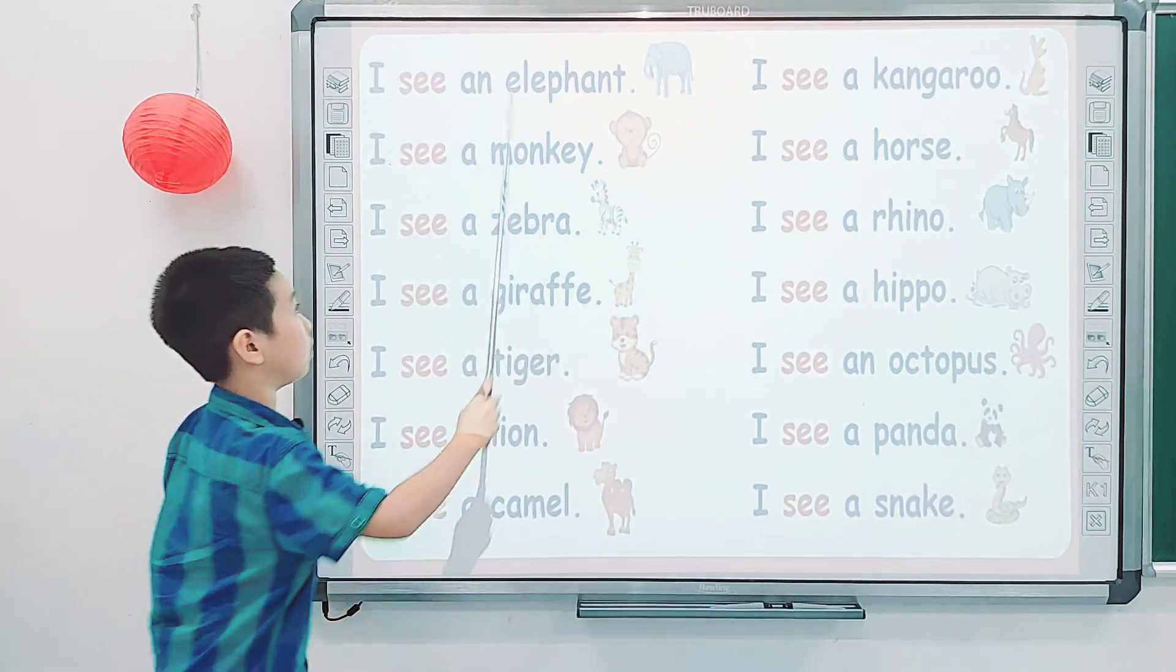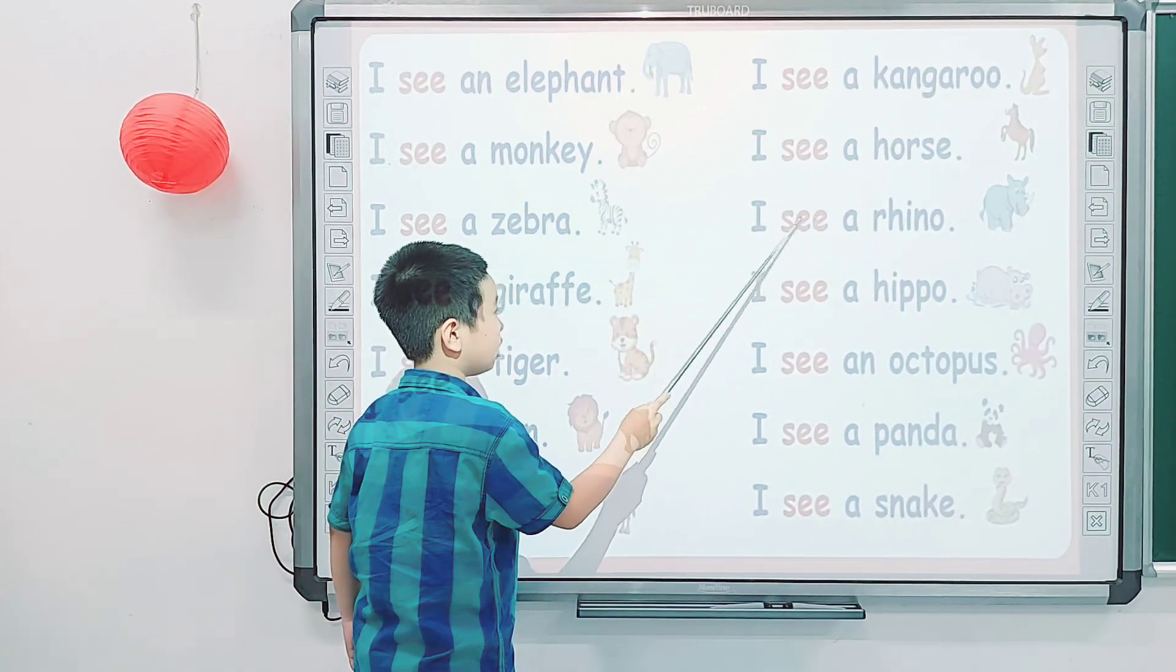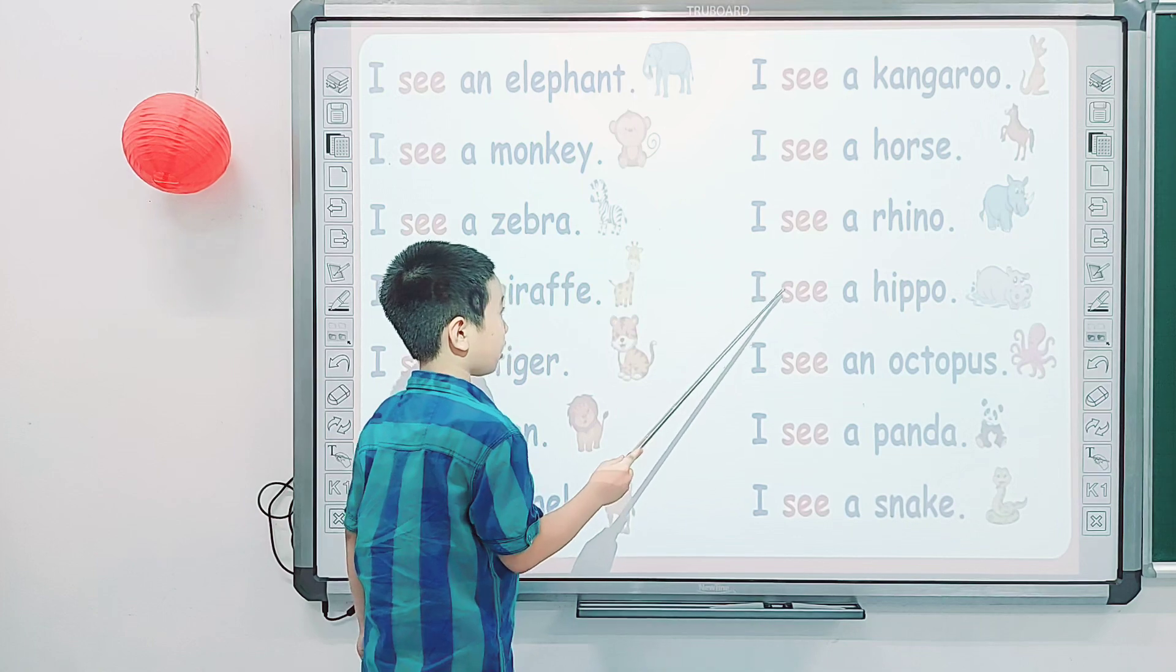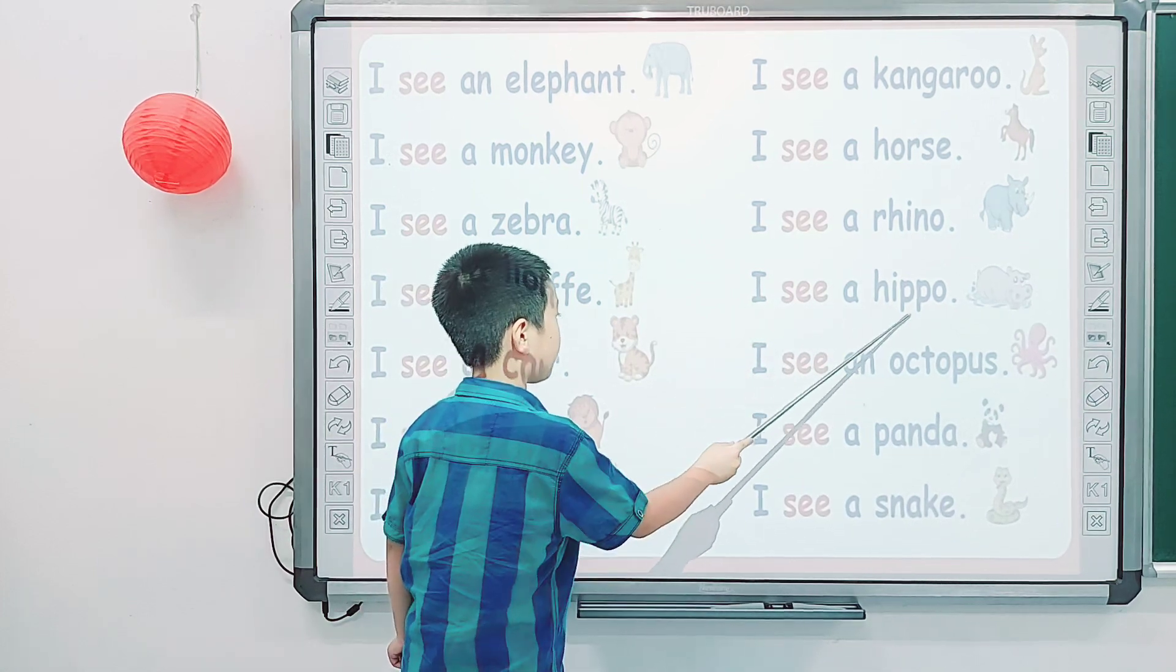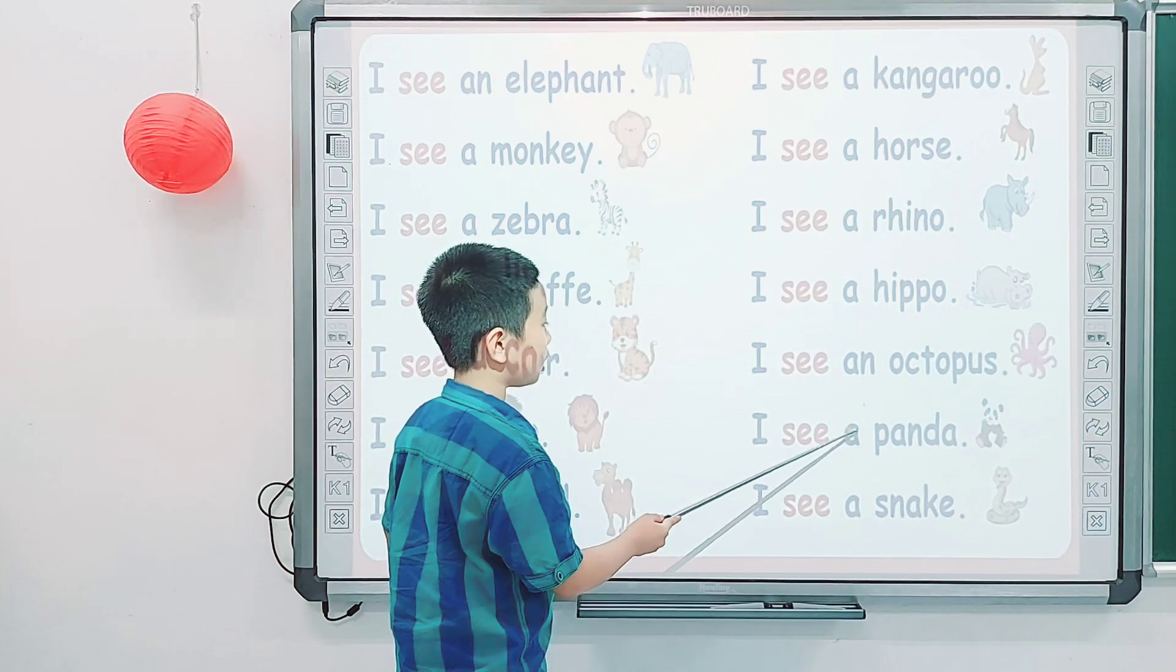I see a camel. I see a kangaroo. I see a horse. I see a rhino. I see a hippo. I see an octopus. I see a panda. I see a snake.